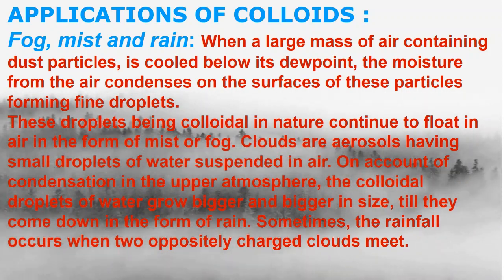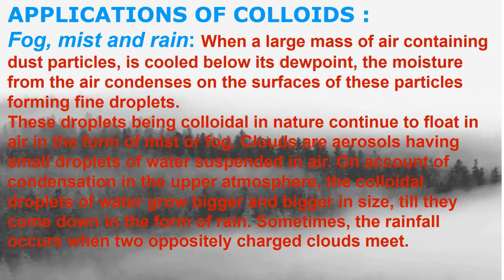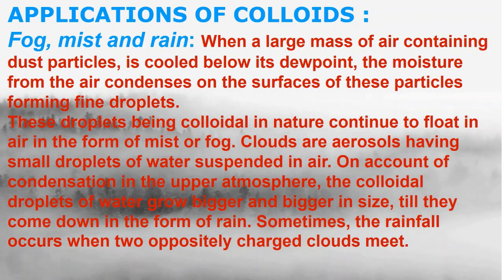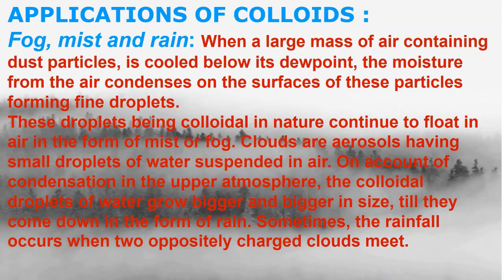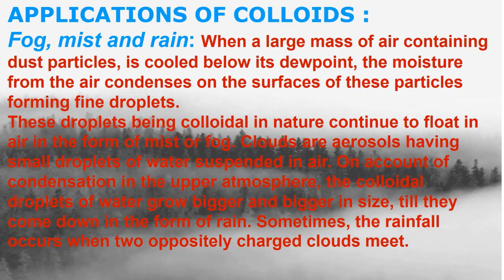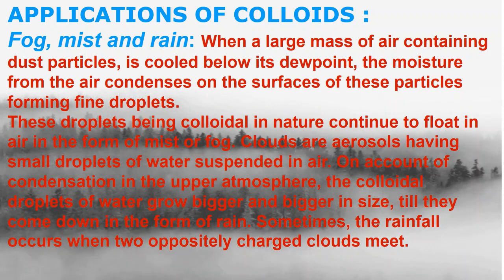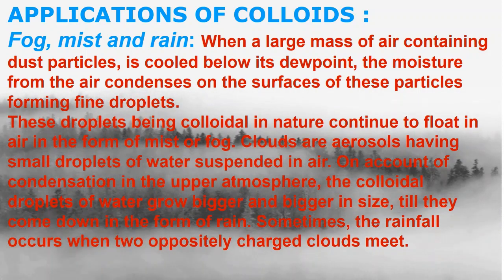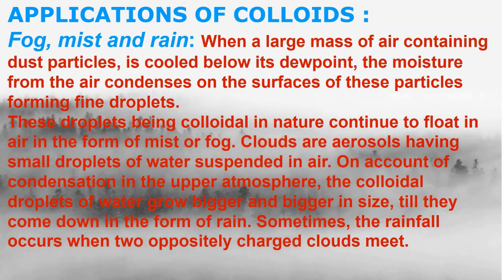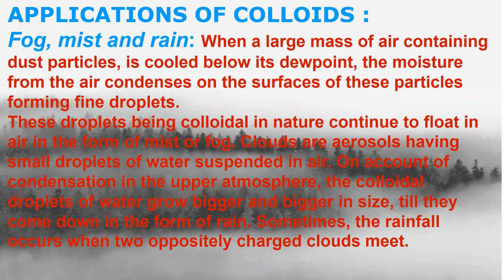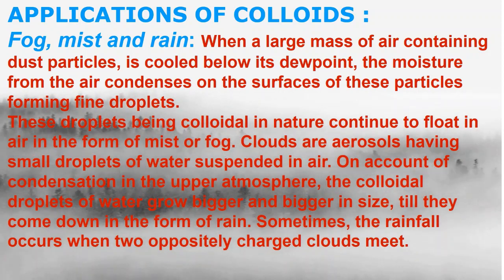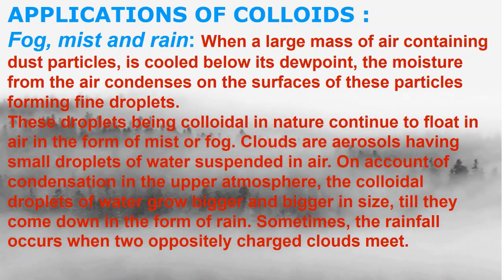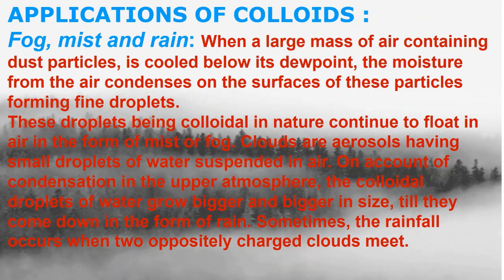Clouds are aerosols having small droplets of water suspended in air. On account of condensation in the upper atmosphere, the colloidal droplets of water grow bigger and bigger in size till they come down in the form of rain. Sometimes rainfall occurs when two oppositely charged clouds meet. All clouds are electrically charged, and when same-charge clouds collide, they produce a spark — the lightning we see.